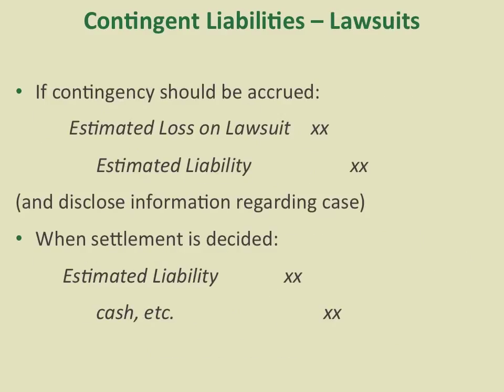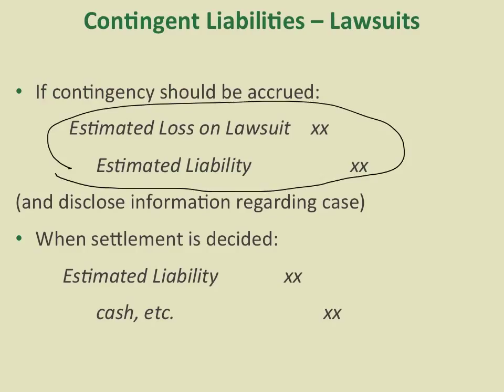The third type of contingent liability is lawsuits. When a lawsuit involves a loss that is probable and the amount is estimable, we record the journal entry in the period when the estimation is made. We debit the estimated loss, which affects the income statement, and credit the estimated liability, which affects the balance sheet. We also disclose additional information in the footnote. When settlement is decided, we debit the estimated liability and credit cash or other assets.